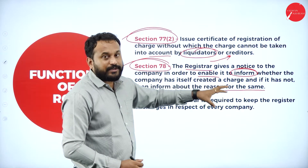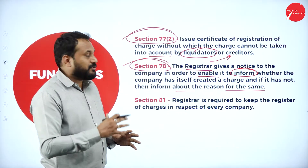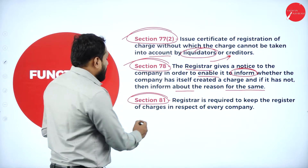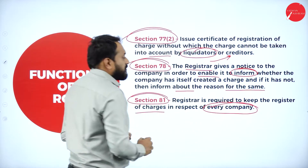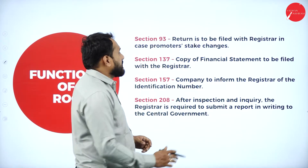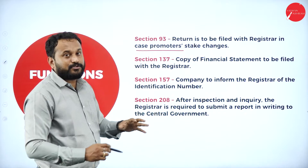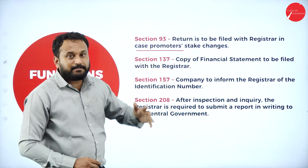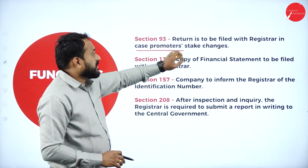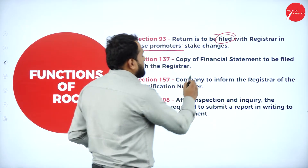The Registrar issues a circular or notice asking whether the company has actually created a charge, and if they have not, the company is supposed to state the reason. Section 81 states that the Registrar is required to keep a register of charges in respect of every company — it is mandatory for every company. Another function is that a return must be filed with the Registrar whenever promoter stakes change, detailing what changed and who has taken those stakes.